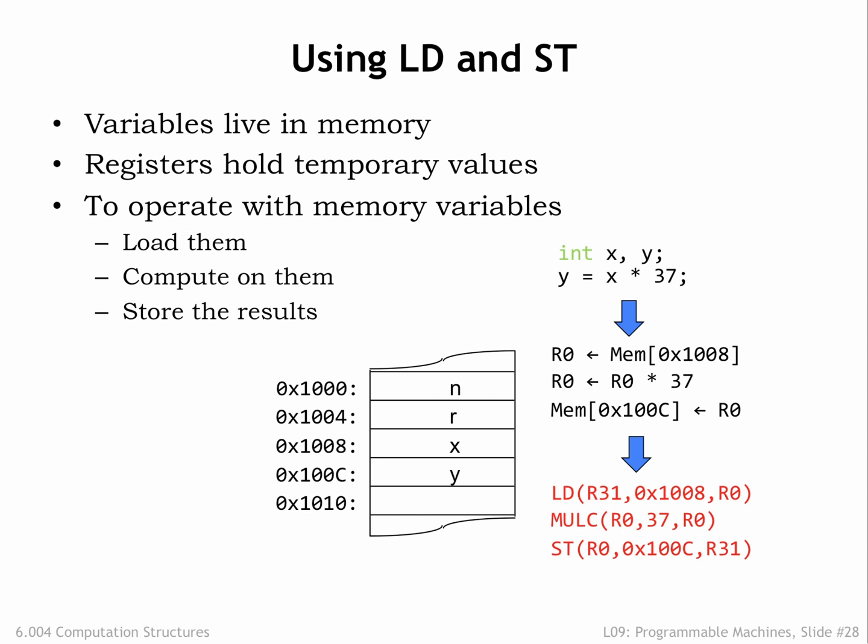But what if the number of large constants we need to store is greater than will fit in low memory, i.e., the addresses that we can access directly? To solve this problem, the Beta includes a load relative instruction, which we'll see in the lecture on the Beta implementation.